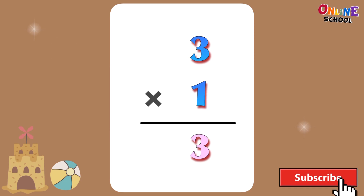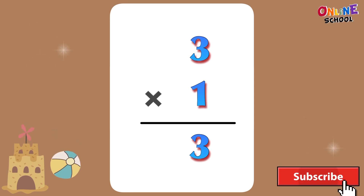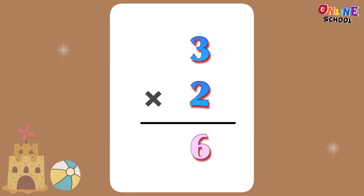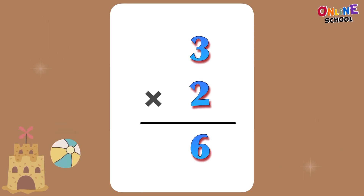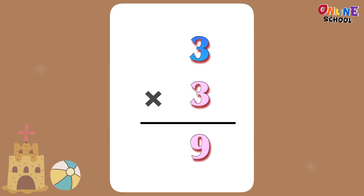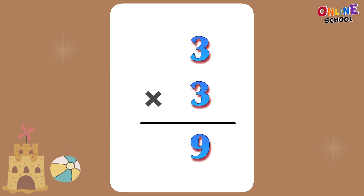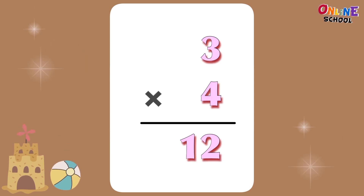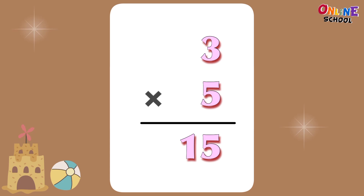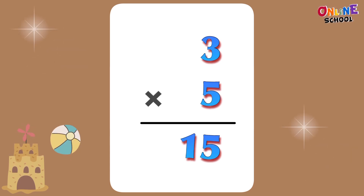3 times 1 equals 3. 3 times 2 equals 6. 3 times 3 equals 9. 3 times 4 equals 12. 3 times 5 equals 15.